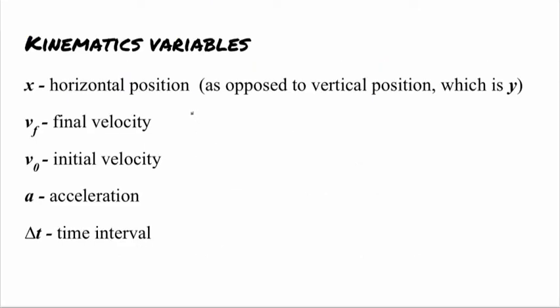The first thing we're going to talk about is the variables. When you see x, x means horizontal position, or position on the horizontal axis. It just means position, it doesn't mean how far it traveled. If you're at that point, that's x. But if you travel from that point over to this point, that distance is delta x. That's the distance you traveled, or the displacement, depending on whether you're talking about a vector or a scalar.